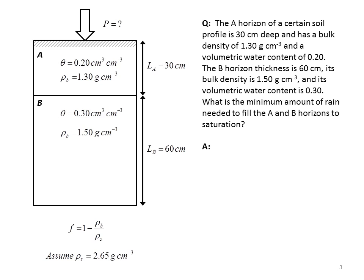When we break this problem down, we want to first determine how much water is required to fill the A horizon to saturation, and then we'll calculate how much is required to fill the B horizon, and then we'll add those two totals together. We're going to use this definition of porosity that we have here below the soil profile. So here we go. We have the porosity of the A horizon is equal to 1 minus 1.3 grams per cubic centimeter divided by 2.65 grams per cubic centimeter. We've simply substituted in the bulk density value here in the numerator and the particle density here in the denominator. And the result is 0.509.